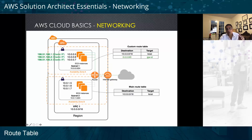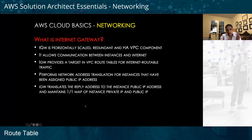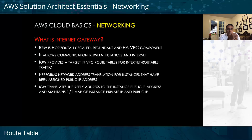The internet gateway checks whether there are rules and regulations that allow traffic to be sent out or let in. It's a key component that handles this job whenever traffic is coming in from outside, or whenever traffic wants to leave the subnet or VPC. Internet gateways scale horizontally, meaning if one goes down another can pick up, and they allow communication between instances and the internet.